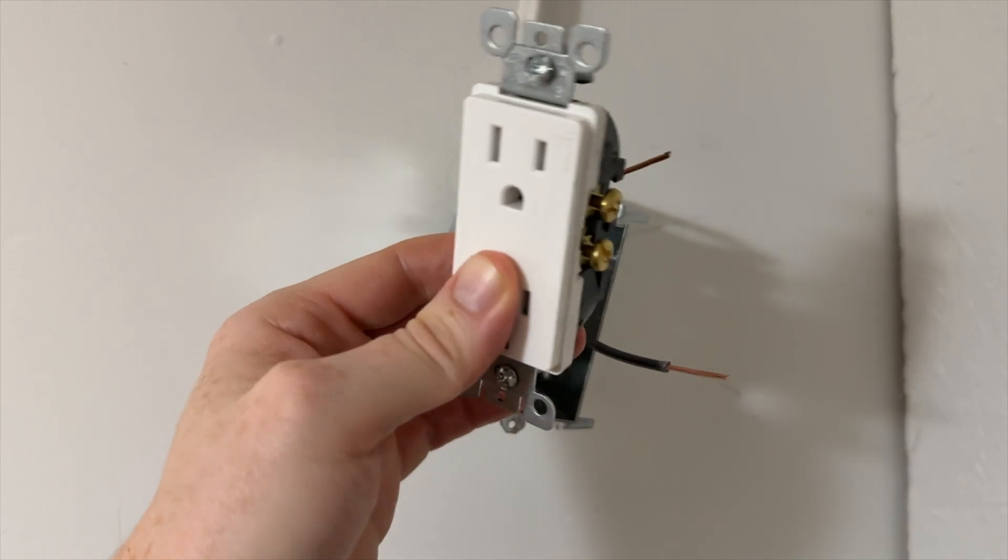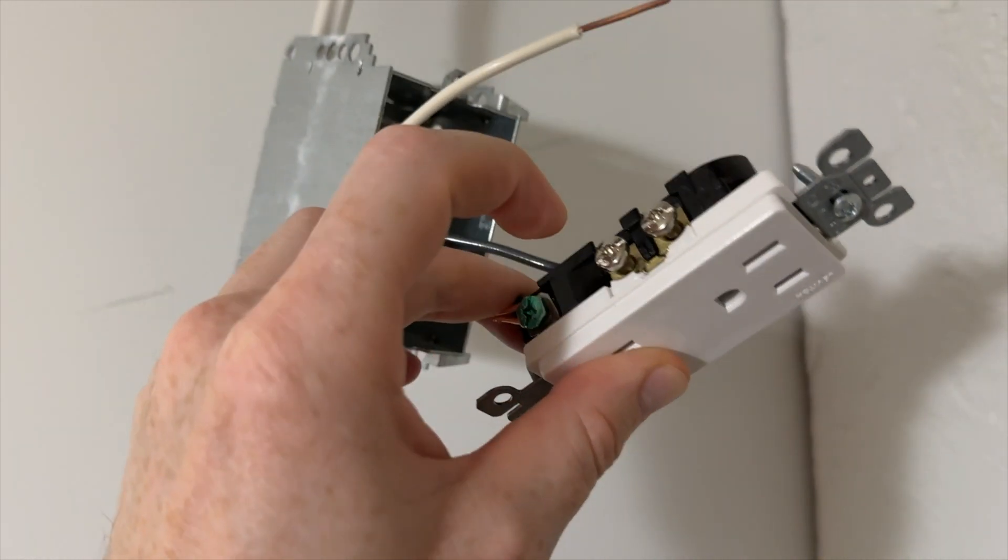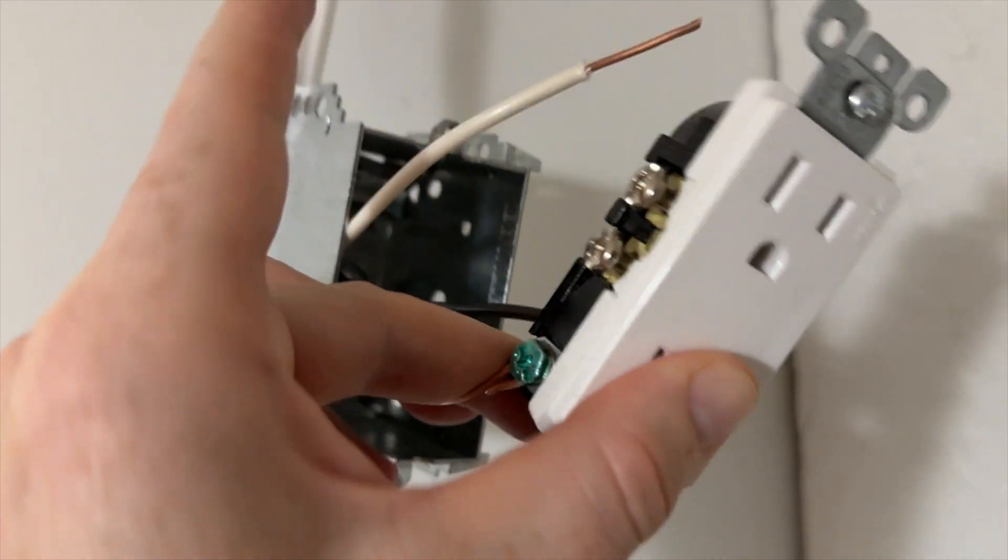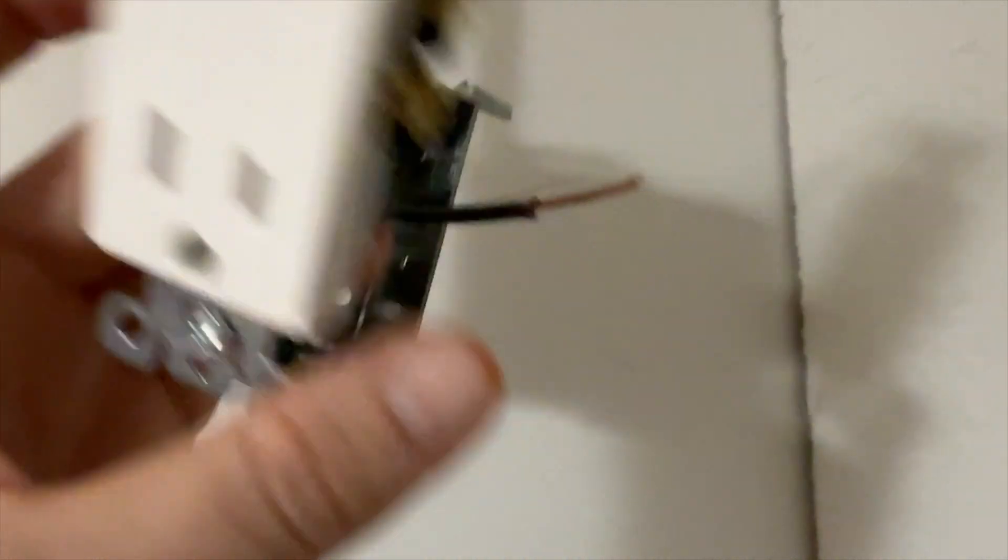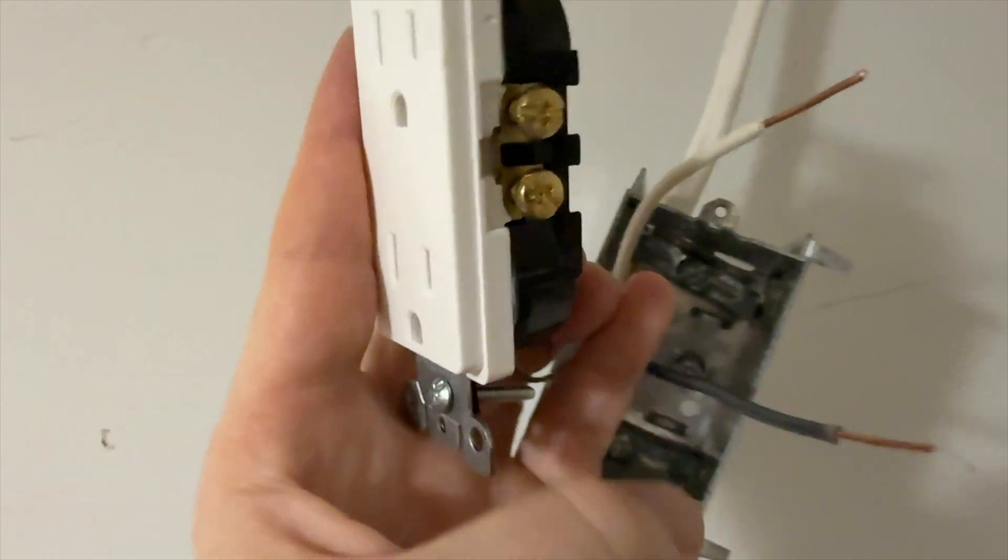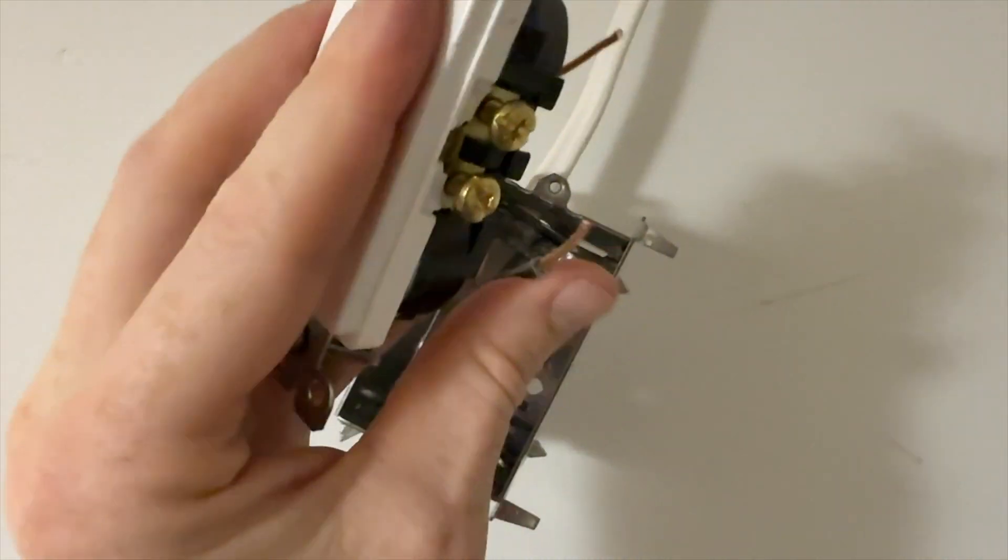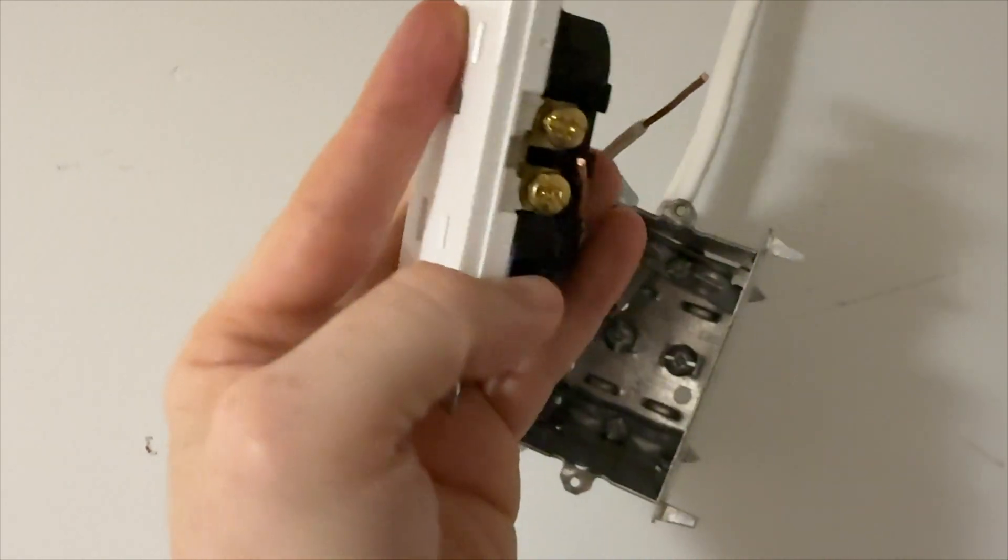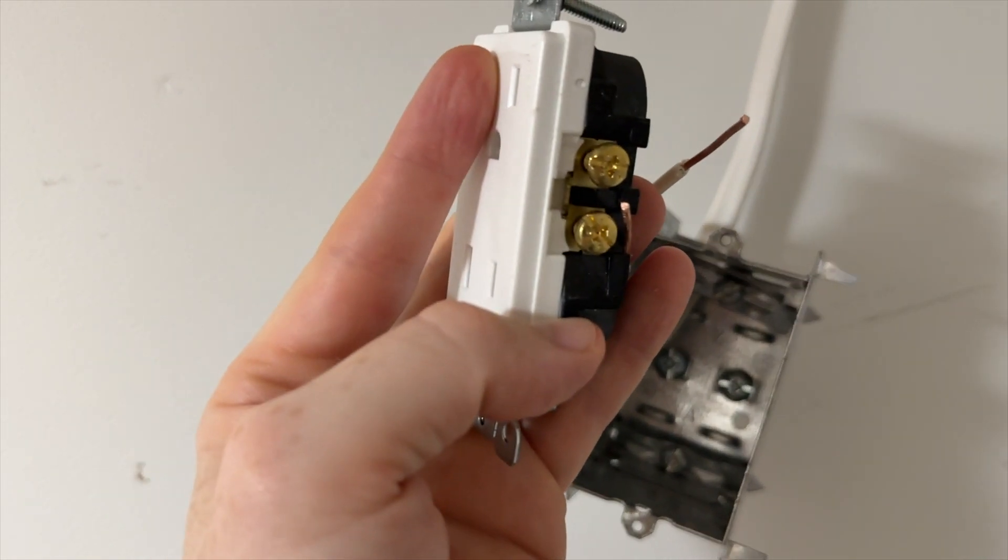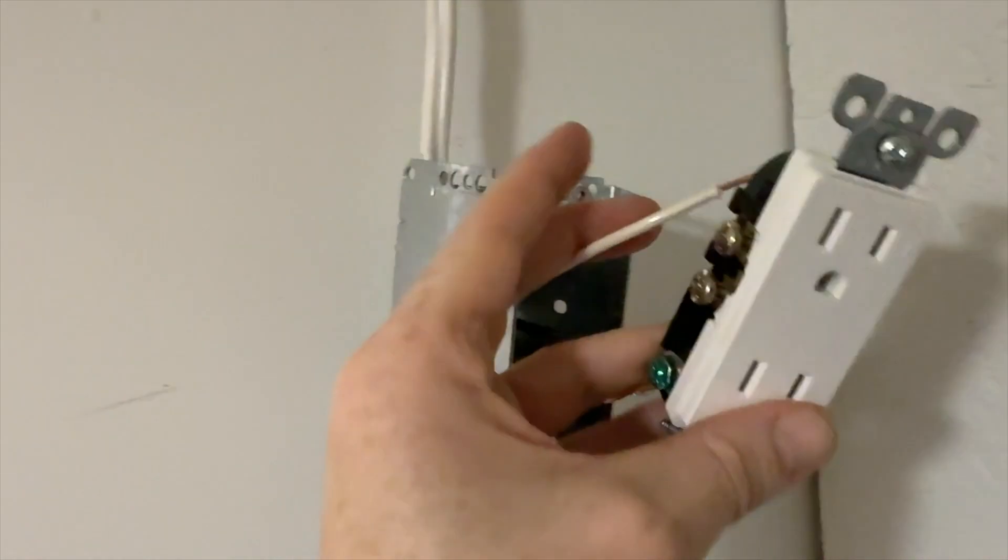Hey guys, if you're setting up an outlet, this is a quick reminder that the silver side goes with your neutral, which is the white wire. And then the gold side goes with your live wire, which is your black wire. So black wire goes with the gold terminal, and silver goes with your white neutral wire.